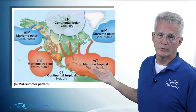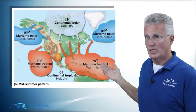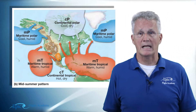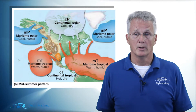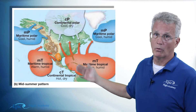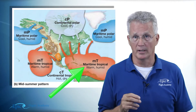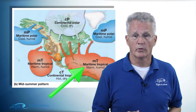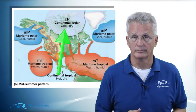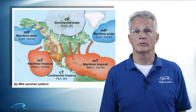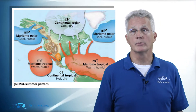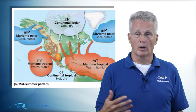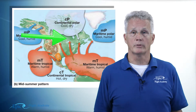On this diagram you can see the North American continent in a typical summer pattern. If an air mass stagnates over the ocean — over the Pacific or the Atlantic — we refer to those as maritime. If that air mass stagnates over the continent, we refer to those as continental. Then it's simply a question of how close that air mass is to the equator or the pole: if it's further north, we call it polar; if it's closer to the equator, we call it tropical.